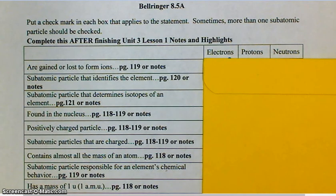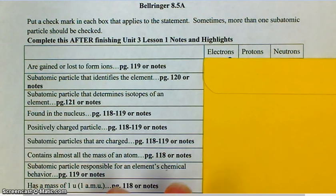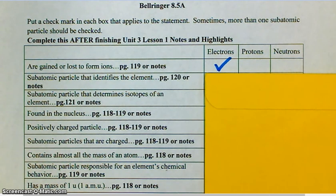Okay, so the first thing we're going to do is go over all of these clues. Most of them you guys saw on the Venn diagram activity, there were a couple that were not on there, including the first one that says are gained or lost to form ions. What are gained or lost to form ions? Electrons, and electrons only. Okay, so place a check by electrons.